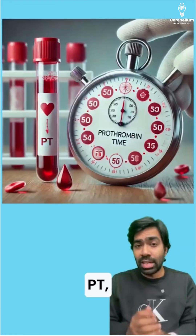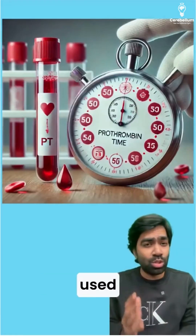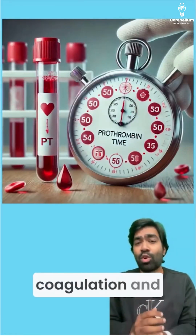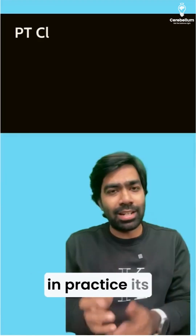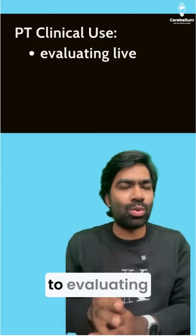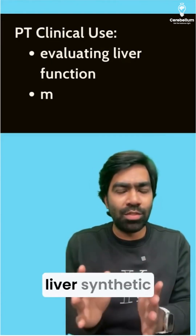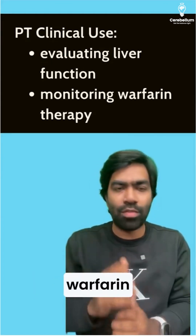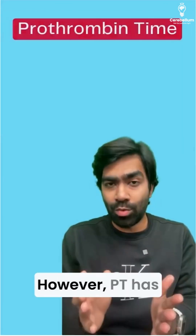Prothrombin time, or PT, is traditionally used to assess the extrinsic pathway of coagulation. In practice, its utility is largely confined to evaluating the liver's synthetic function and for monitoring warfarin therapy.